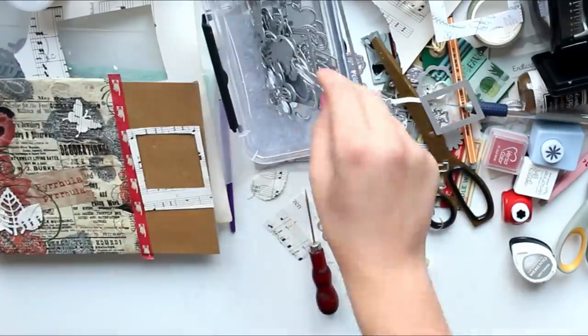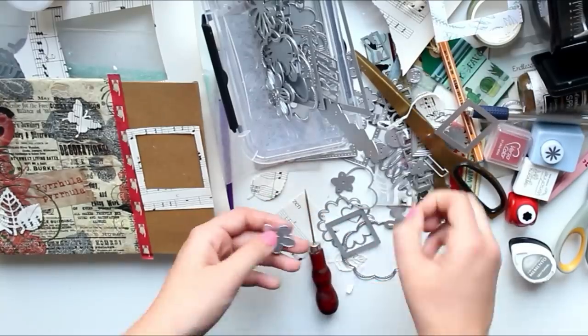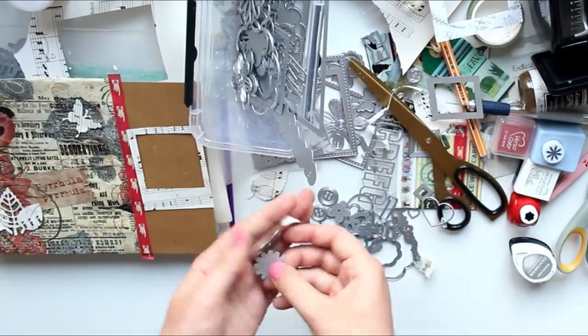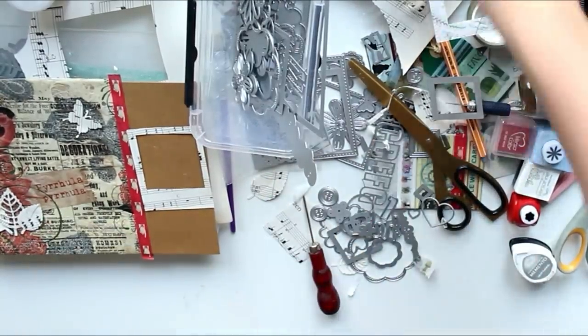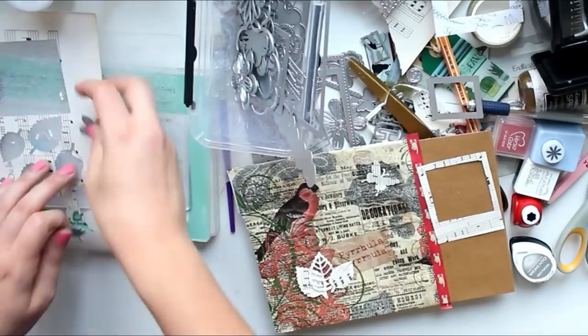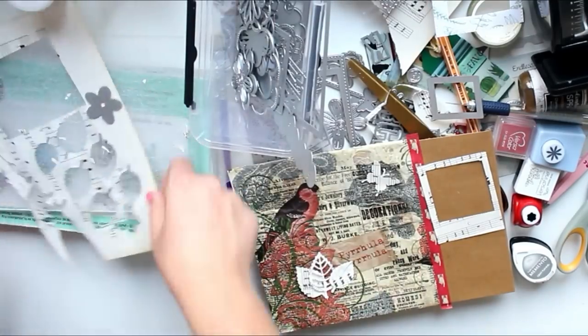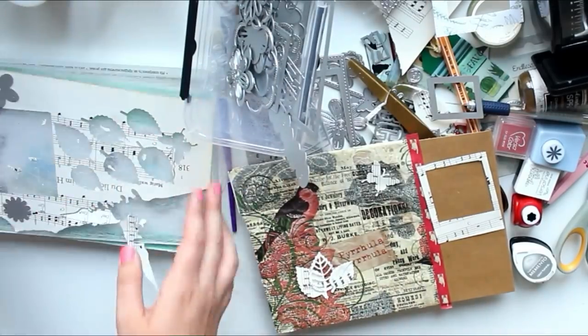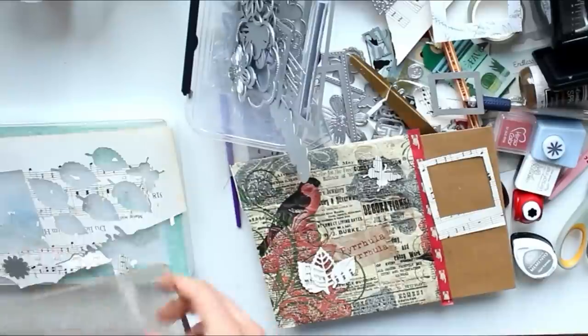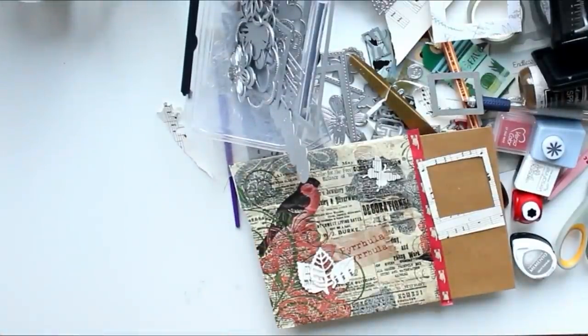By the way, I made a Polaroid frame as you can see on the right, and what I used for that is a rectangular die and a square die. Then I just created my own Polaroid die basically by combining these two.